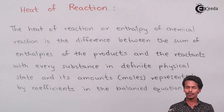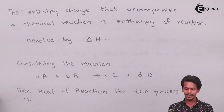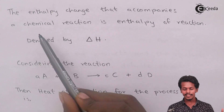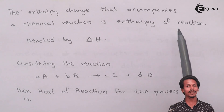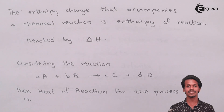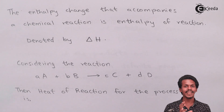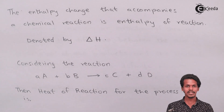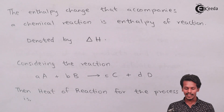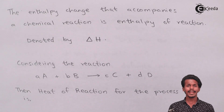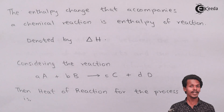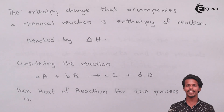The enthalpy change that accompanies a chemical reaction is called the enthalpy of reaction — or heat of reaction. It is denoted by delta H, which can be positive or negative. We will talk about that later, but first let us understand how to calculate the delta H of a particular reaction.